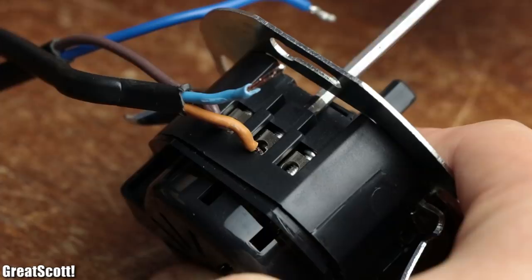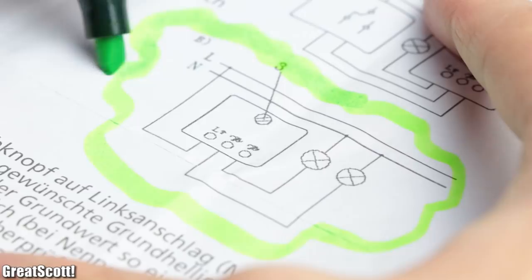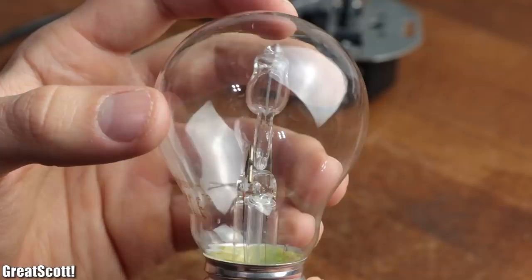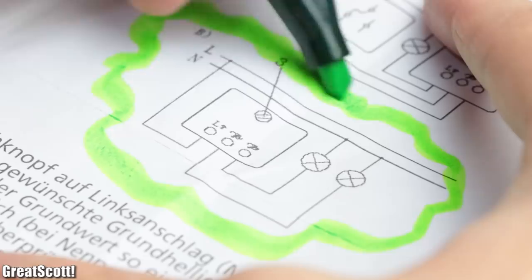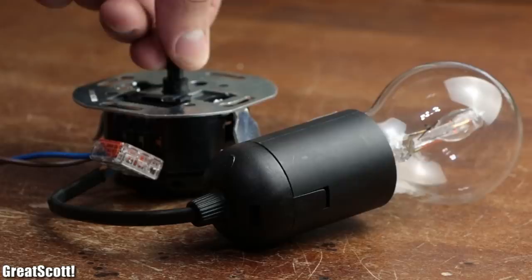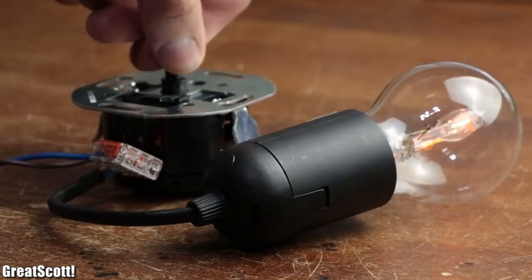So I hooked it up to mains voltage and an E27 socket according to the wiring diagram of its instruction manual. As a first simple test subject I will be using this 42 watt halogen light bulb. After securing it inside the socket it was a breeze to dim the brightness of it with the main potentiometer of the dimmer.